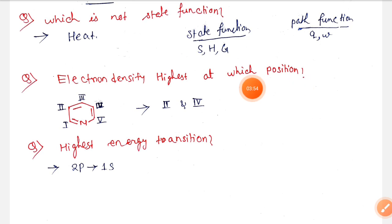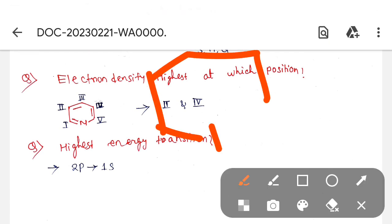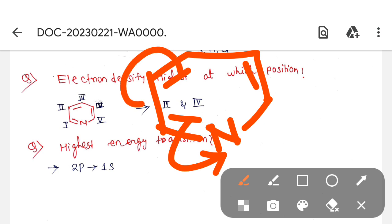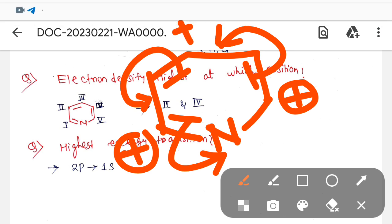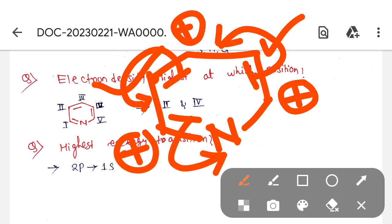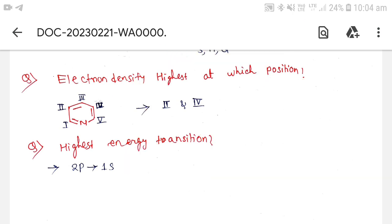If we show resonance, then this will form structure. So in this case positive charge will be generated in this case also, and in this case also positive charge. So this position and this position have more electron density, so the correct answer is two and four.